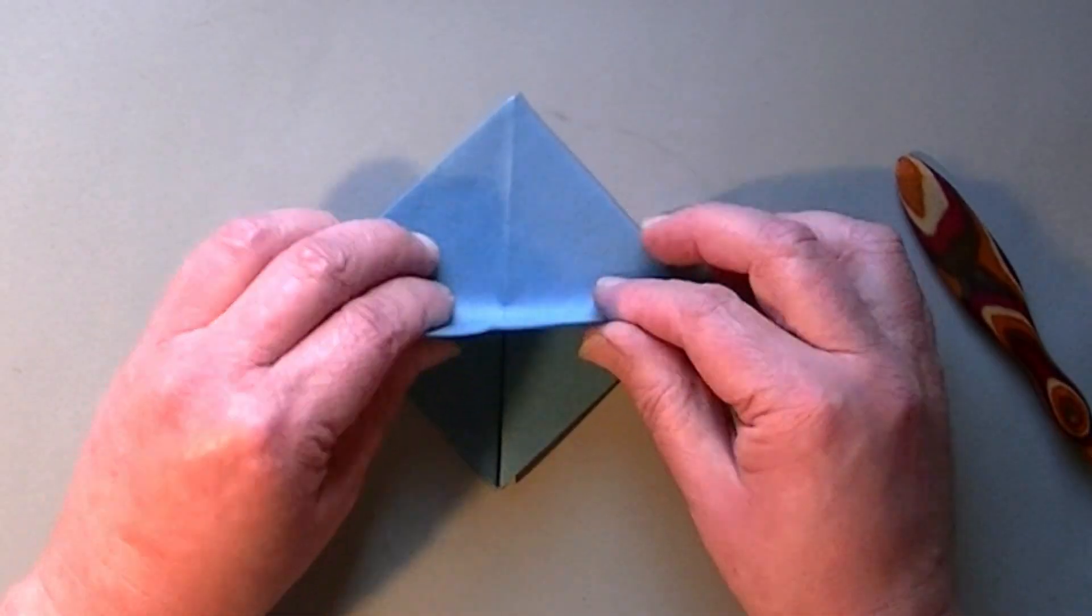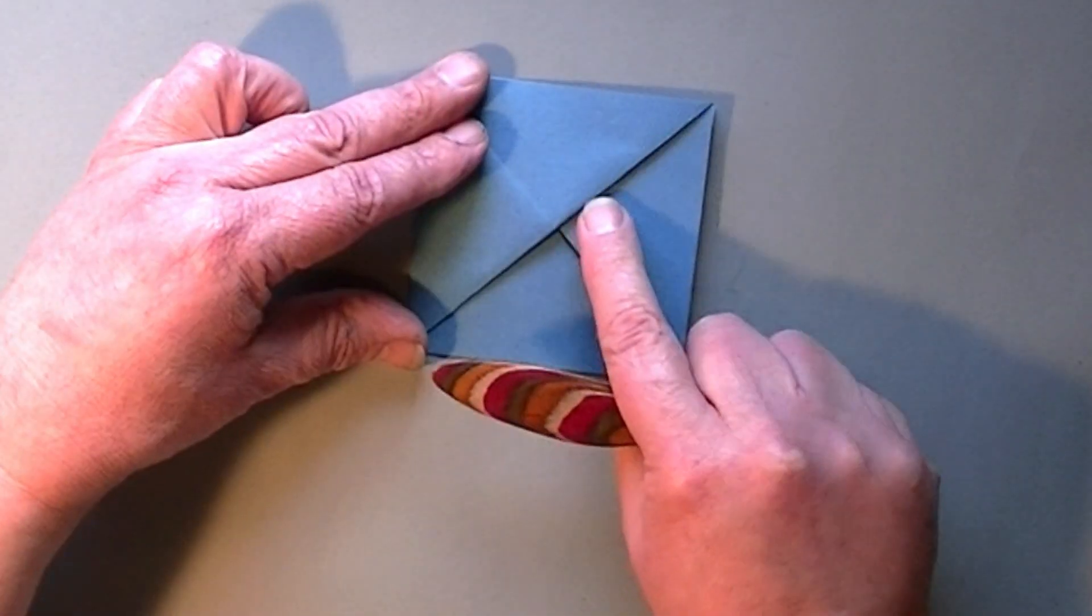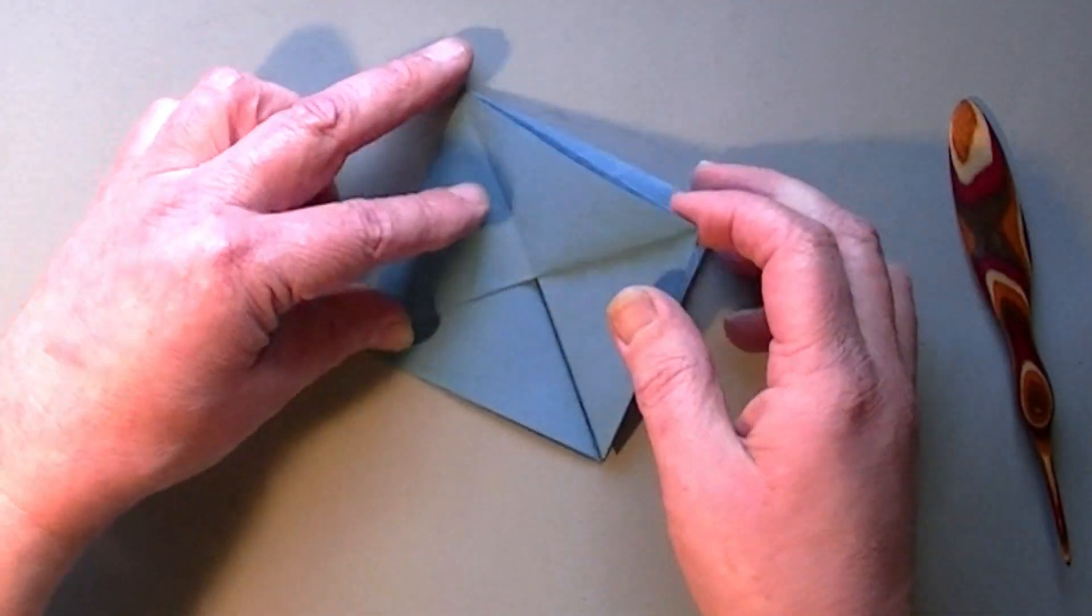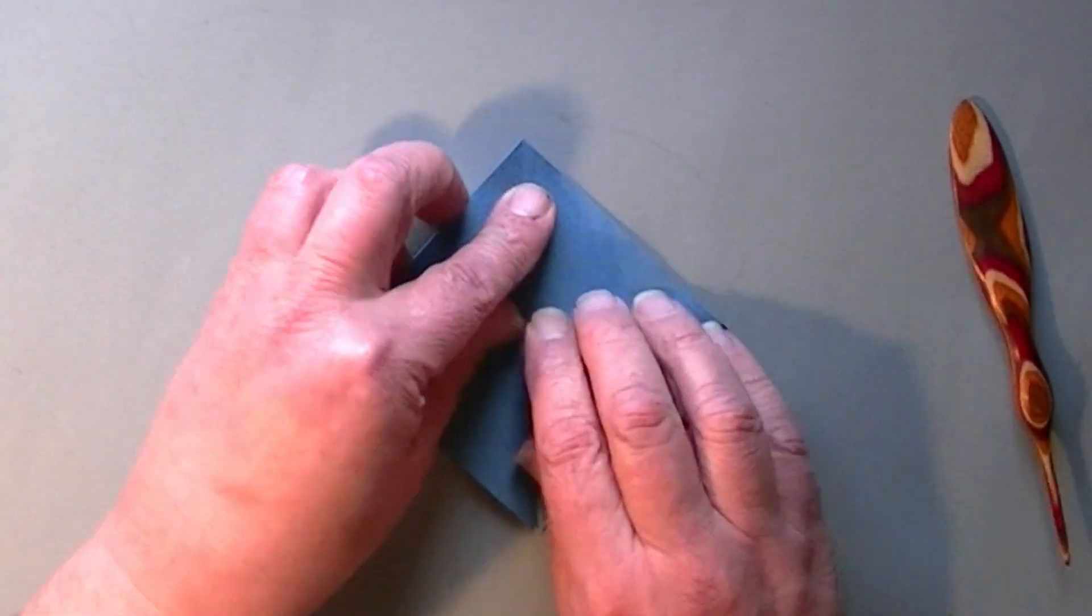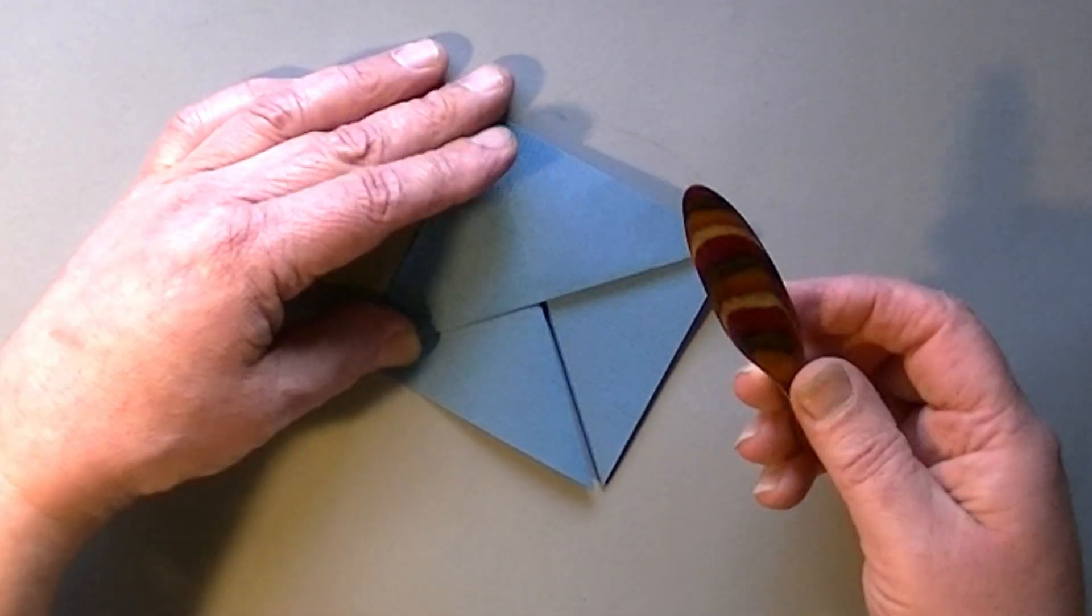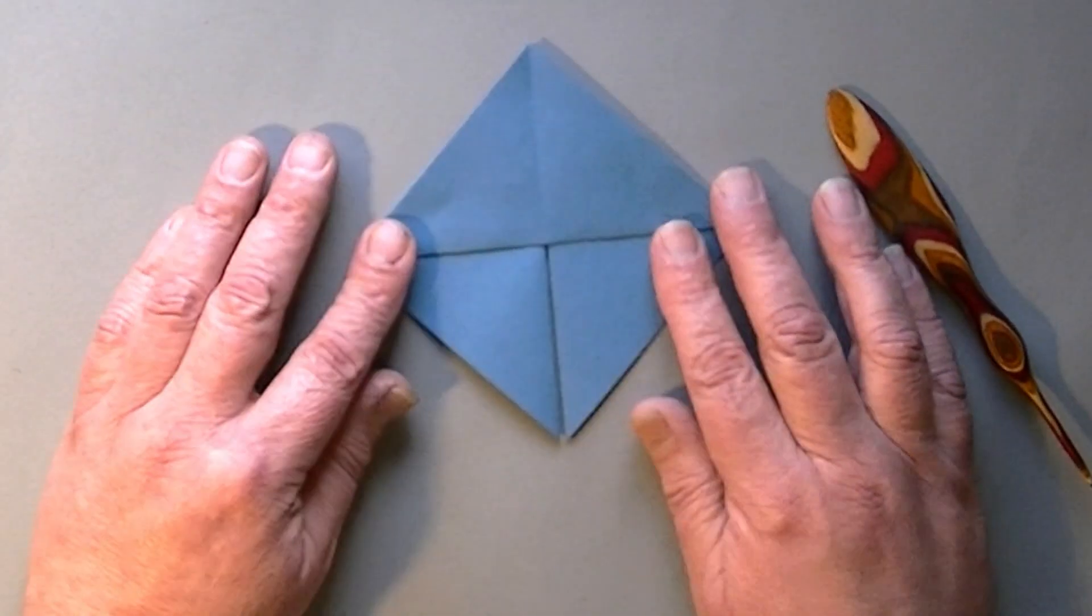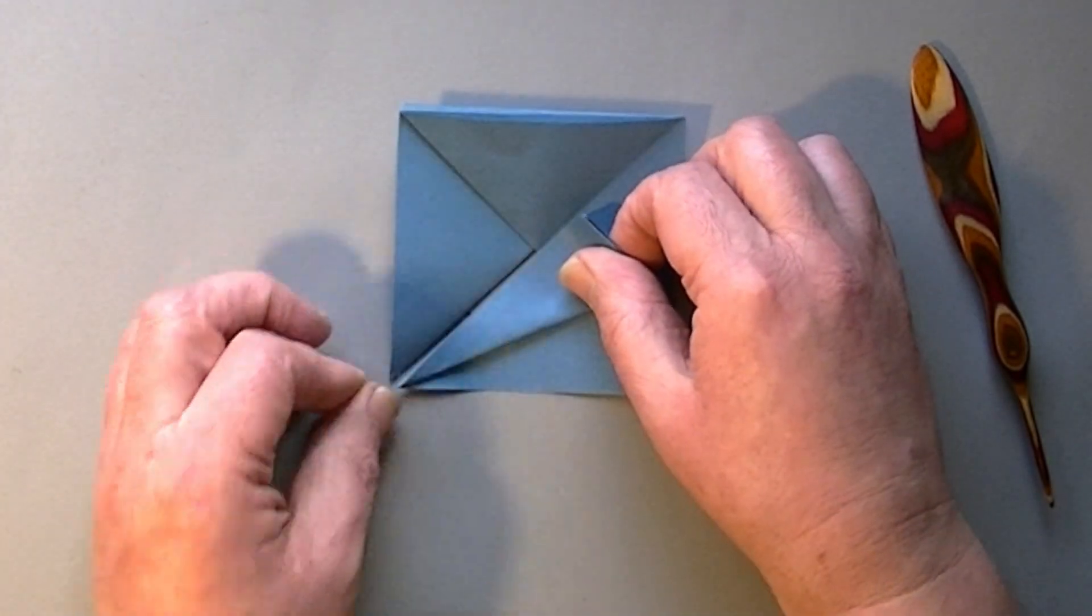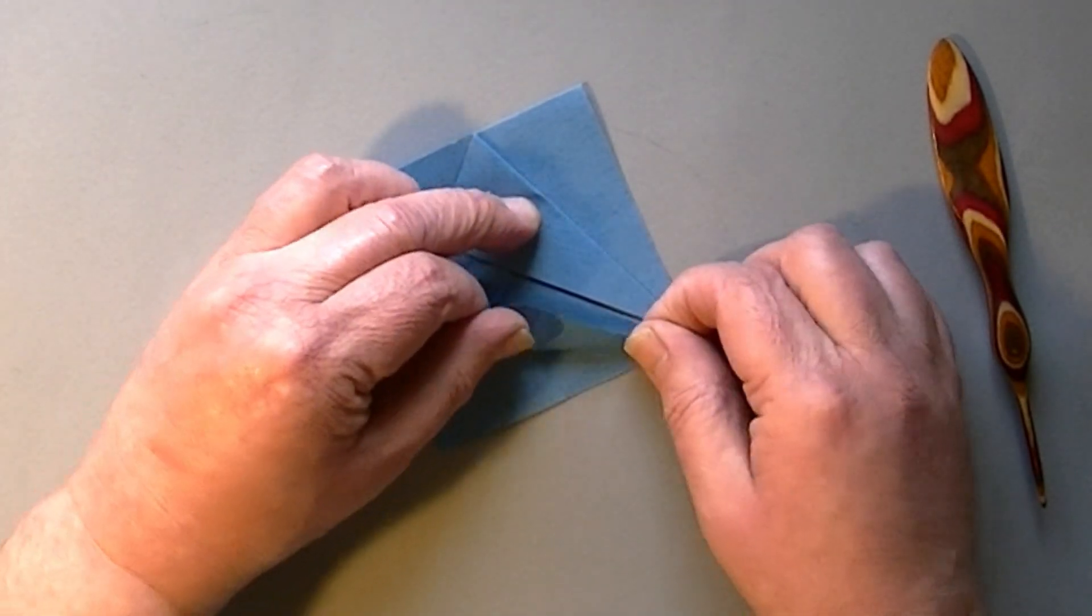Now we're going to fold the lowest corner up to the top. You can see the crease isn't quite straight, but when you just give it one of those, it just ends up beautiful. Turn over and repeat, bottom point up to the top. I don't use this with thinner paper, but this paper's a little bit thicker and my fingers are old and wrinkled, so I need a bit of help. So now we're going to take one of these original raw edges and fold it over to the center.